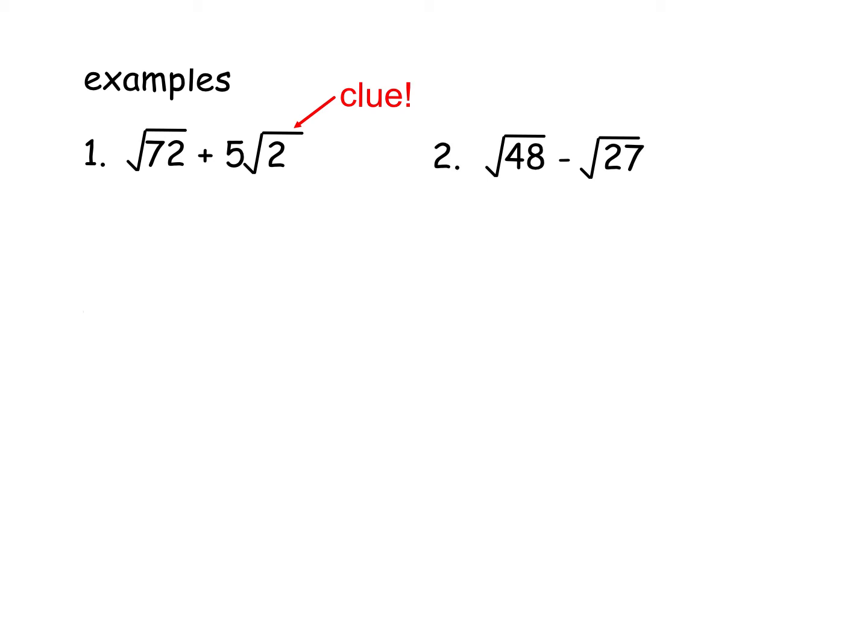So √72, remember I've already discussed this one in a previous video. Automatic thought is to jump in there and use 9 and 8, but watch, there is a bigger one. Always look for the biggest possible square factor you can. 72 is actually a product of 36 and 2. There's that 2 to match the 5√2. So I'm going to write √72 as √36√2 plus 5√2.